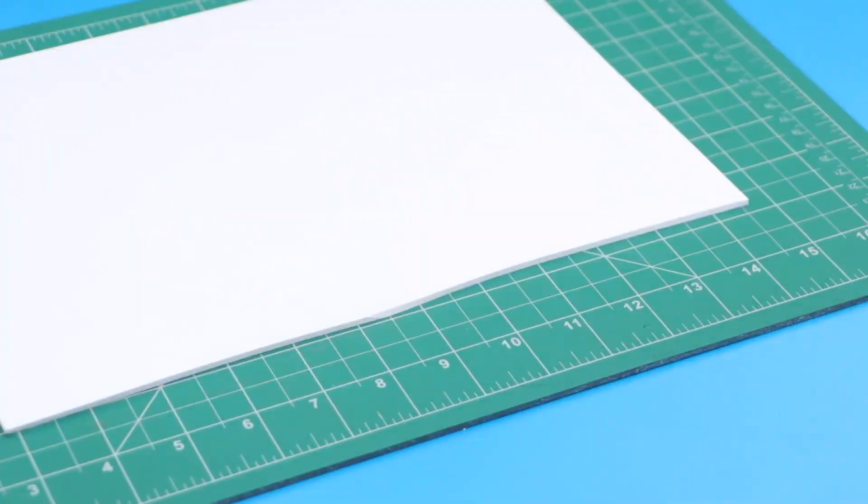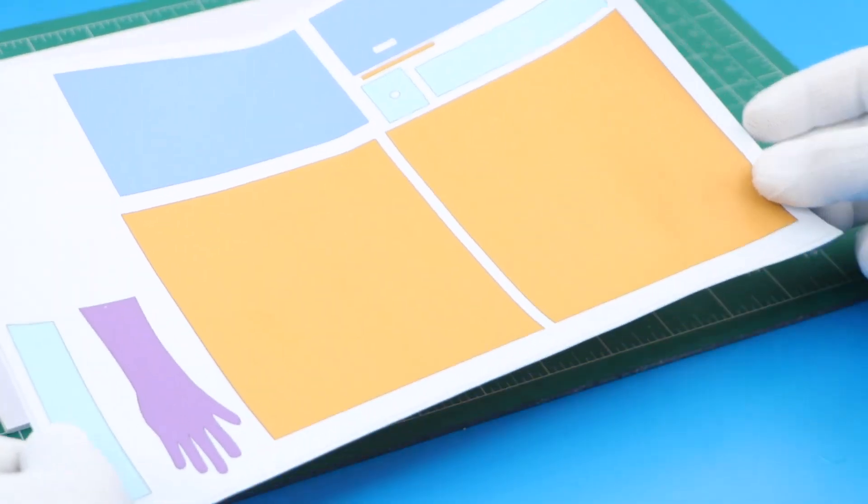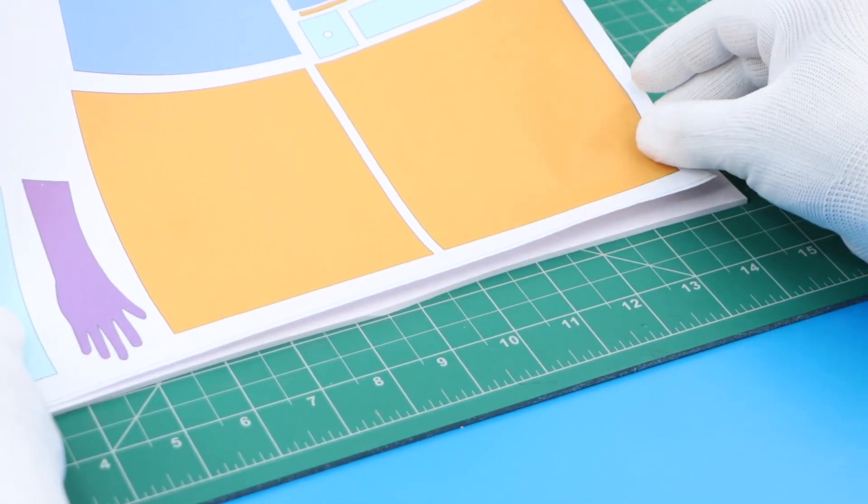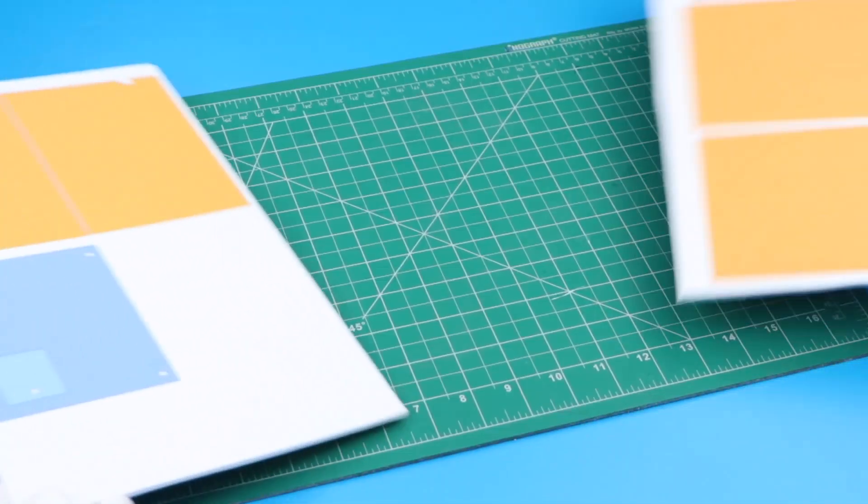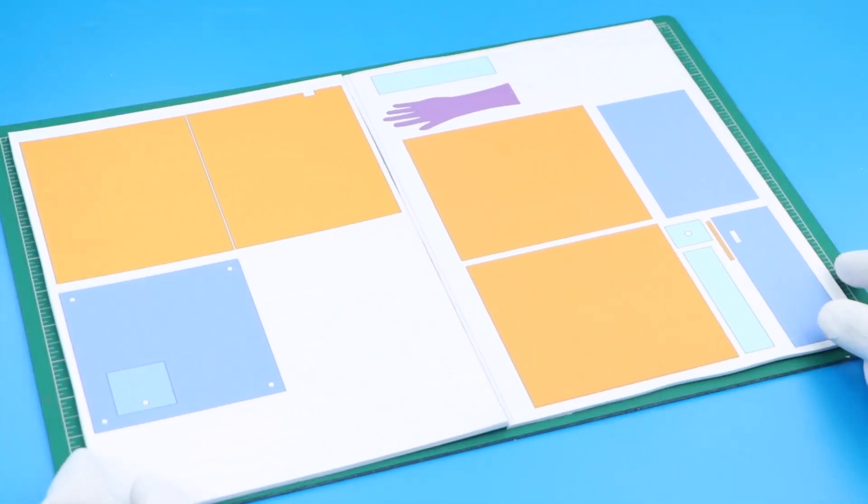Let's start with the sunboard. Stick the printout of this sheet on the sunboard. The link for this sheet is available in the description.